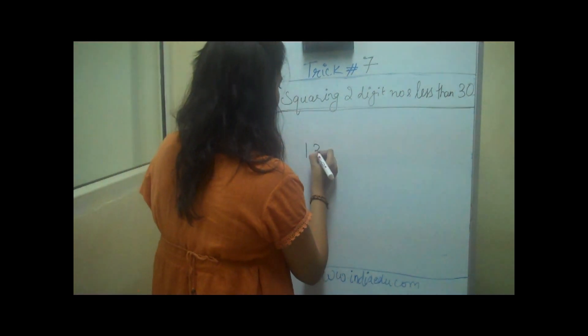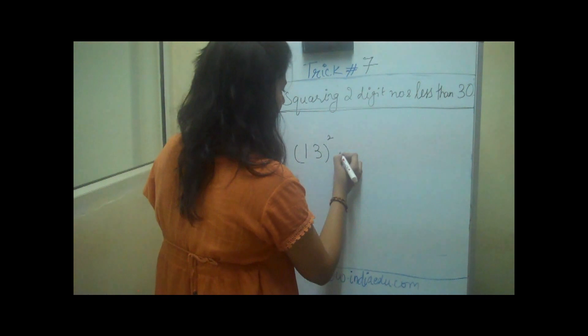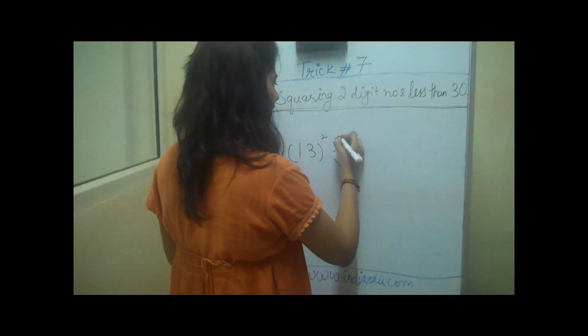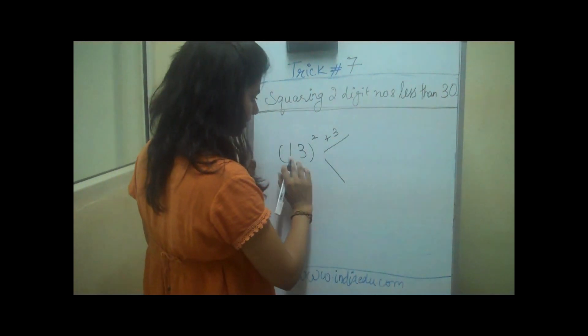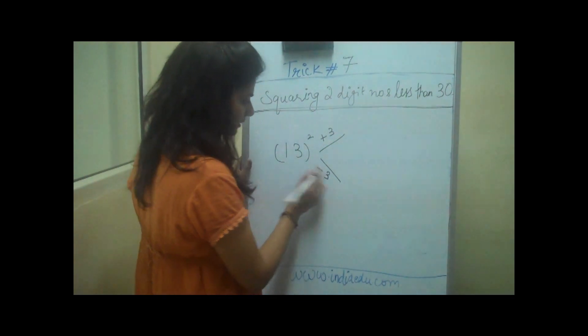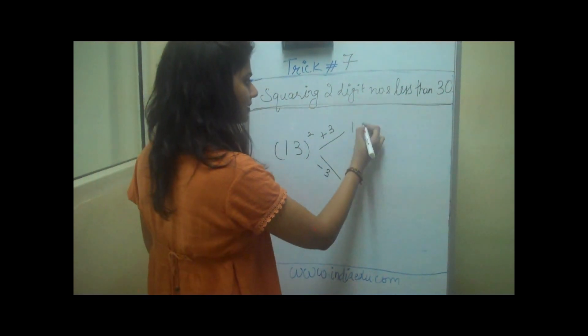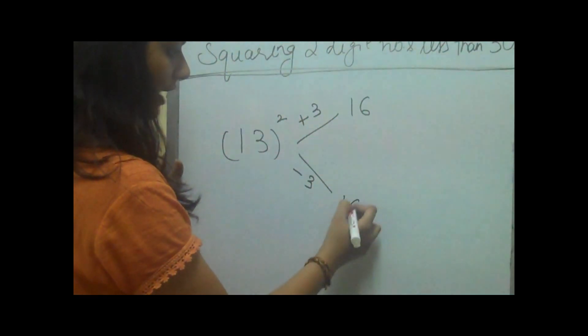For example, if we have the number 13 and we're going to square it, we do two things. First, we'll add 3 to this number and then subtract 3 from this number, which makes 16 and 13 minus 3 makes 10.